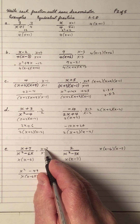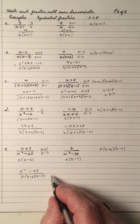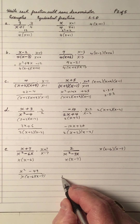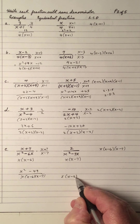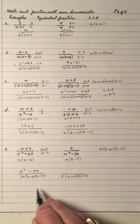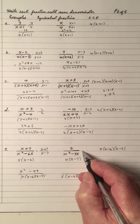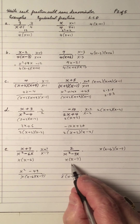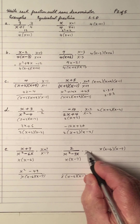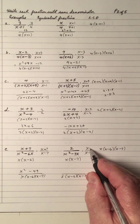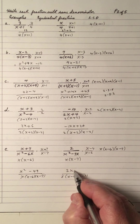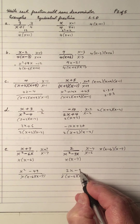And negative 7 times positive 7 is negative 49. Write this denominator down again in the same order. And we need to multiply this one by — we have an x and an x minus 7; we need an x minus 6, top and bottom. So that gives me 2 times x is 2x; 2 times negative 4 is negative 8.